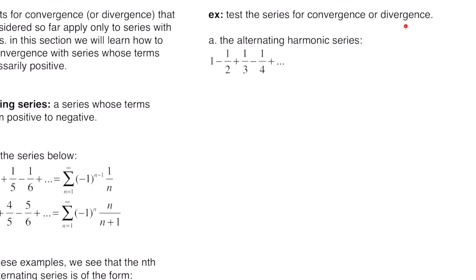This example says test the series for convergence or divergence. Part A is the alternating harmonic series: 1, then negative 1 half, then positive 1 third, negative 1 fourth. We rewrite this in sigma form using negative 1 to the n minus 1, since the first term is positive. When you plug in 1, negative 1 to the 0 is positive; when you plug in 2, negative 1 to the 1 is negative. Focusing on just the numbers 1, 1 half, 1 third, 1 fourth — that's described as 1 over n. So b sub n equals 1 over n, the non-alternating part.